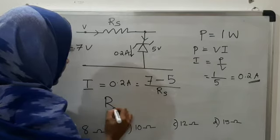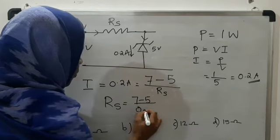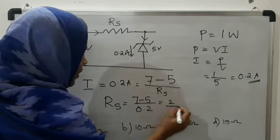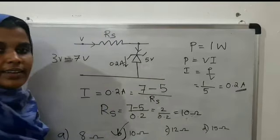From this, we get RS equal to 7 minus 5 divided by 0.2. 2 divided by 0.2, that equals 10 ohm. Option B is the right answer.